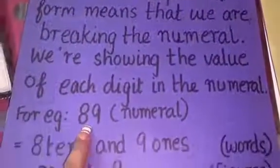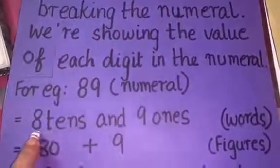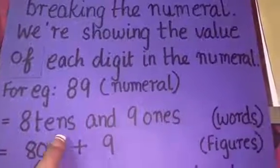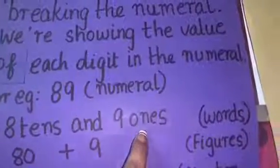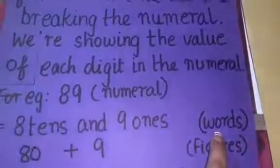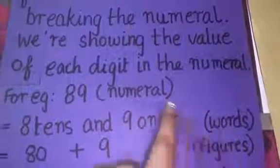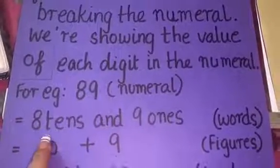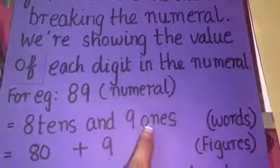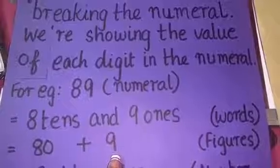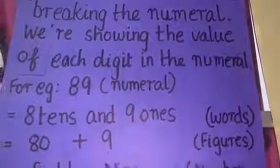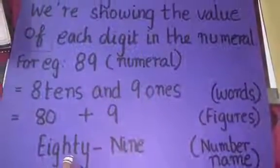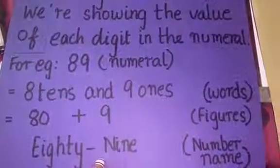For example, numeral 89 can be written as 8 tens and 9 ones when we break it. This is expanded form in words. The same numeral can be written as 8 tens, 80 plus 9 ones gives 9 in figures. And the number name for it is as shown, eighty-nine.